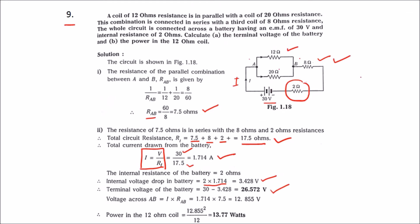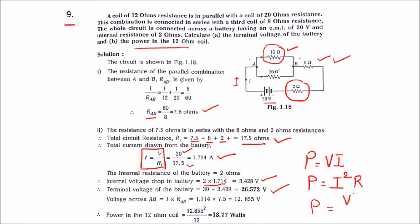The second part is the power in the 12 ohm coil. Power can be expressed as V×I, I²R, or V²/R. Since we know the current, we first find the voltage across AB, which equals I × RAB, giving 12.855 volts.